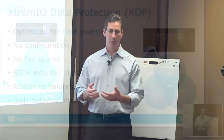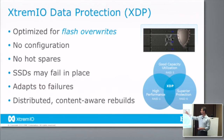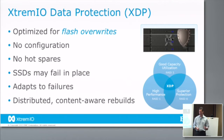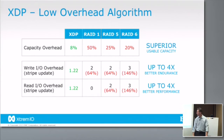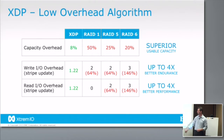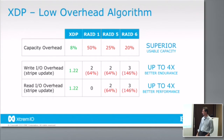After compression, we run things through our data protection scheme. This is what protects everything against an SSD failure within a shelf. We have a scheme called XDP, which was written specifically for XtreameIO and is optimized around flash overwrites. This is key because when the array is being overwritten, this is why we can maintain the performance. It's why we can allow the arrays to run very close to full and not have to reserve 20 or 30% of the space. It's also better for performance and endurance because we do fewer I/Os to do stripe updates than classic RAID algorithms like RAID 6.